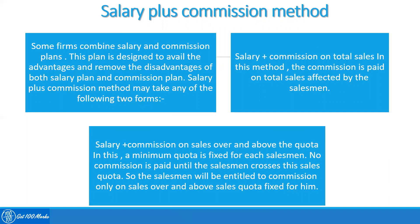The second form is salary plus commission on sales over and above the quota. In this method, a minimum quota is fixed for each salesman. No commission is paid until the salesman crosses their sales quota. The salesman is entitled to commission only on the sales over and above the sales quota fixed for him.